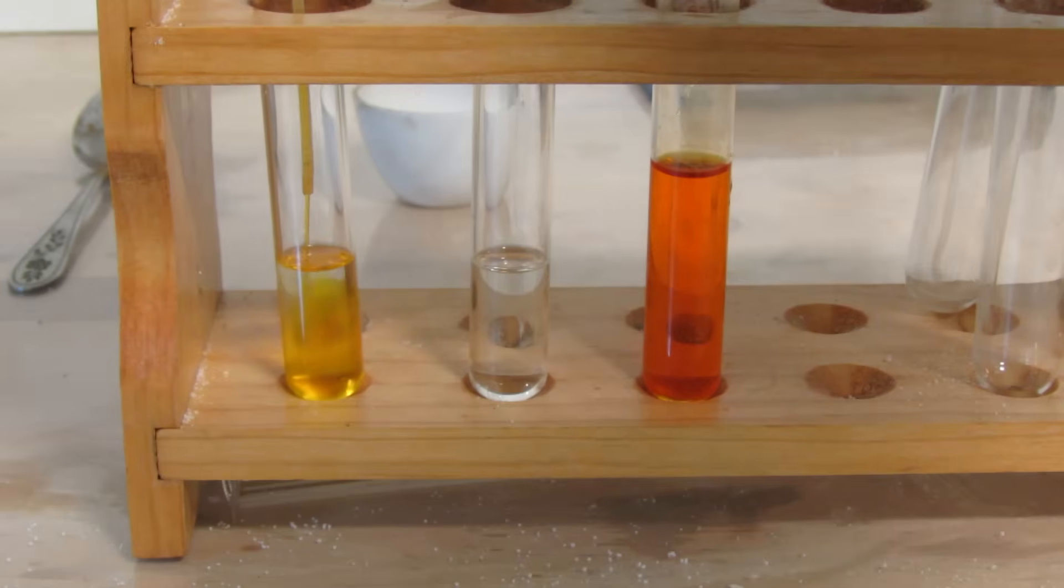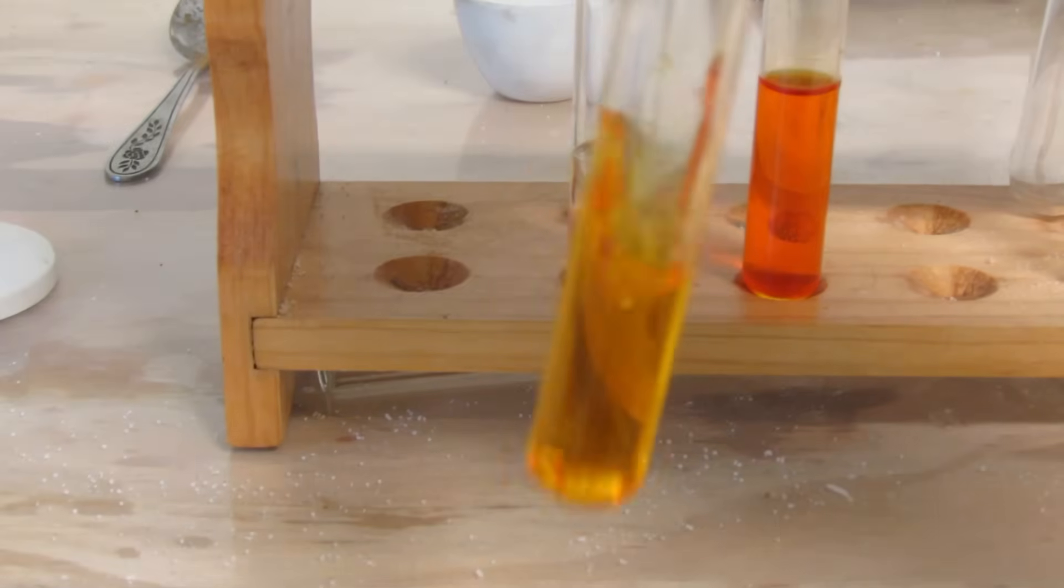First, I'm going to use a pipette to put some bromine water into the alkane molecule. You can see that the bromine water turns it a dark yellow color.